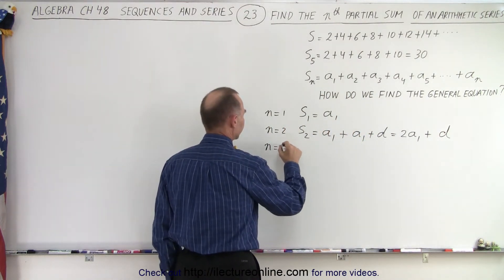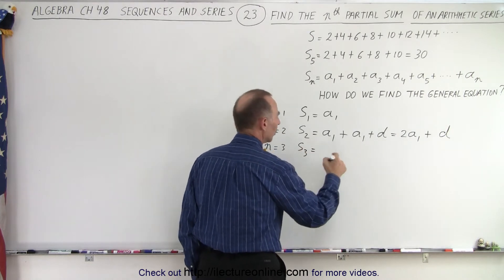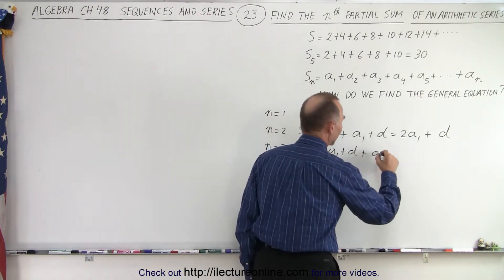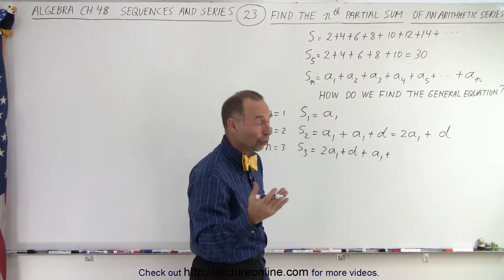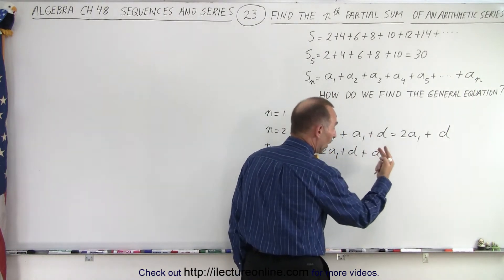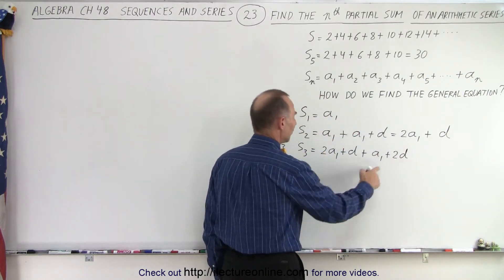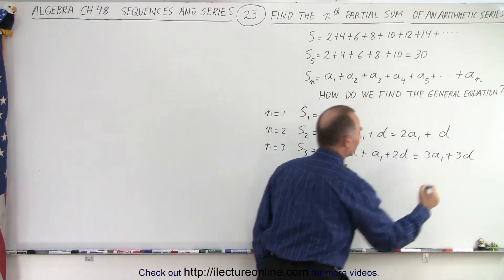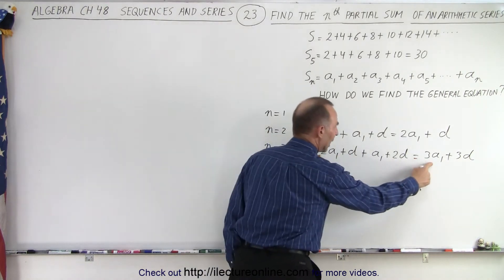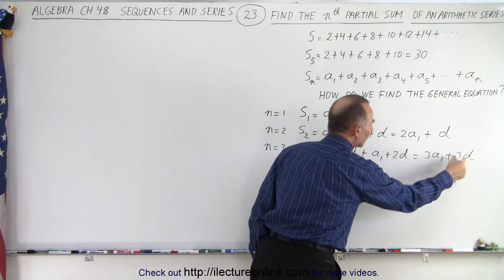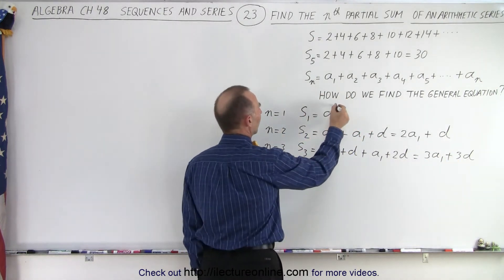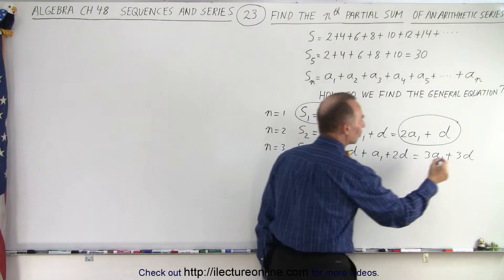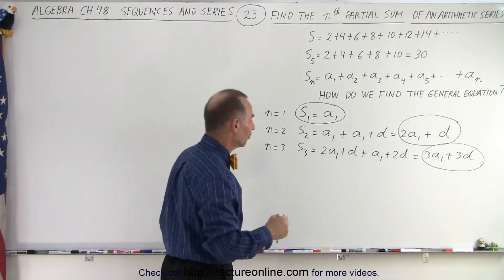When n is equal to 3, S sub 3 equals what we had before — 2a sub 1 plus d — plus the third term, which is a sub 1 plus 2d. Adding those together gives 3a sub 1 plus 3d. So summarizing: S sub 1 is a sub 1, S sub 2 is 2a sub 1 plus d, and S sub 3 is 3a sub 1 plus 3d.